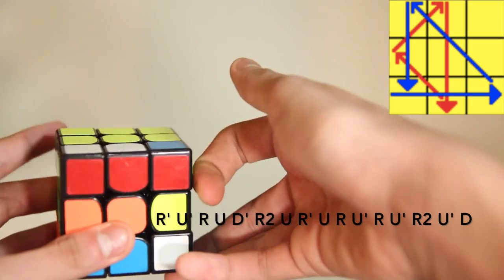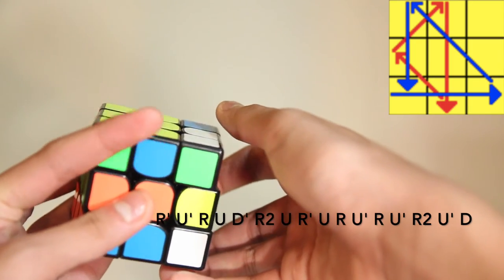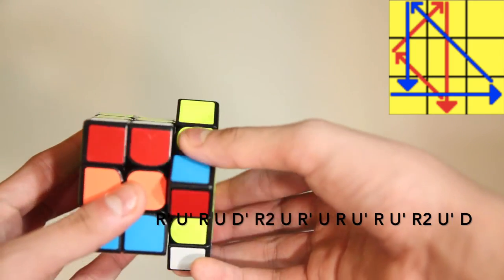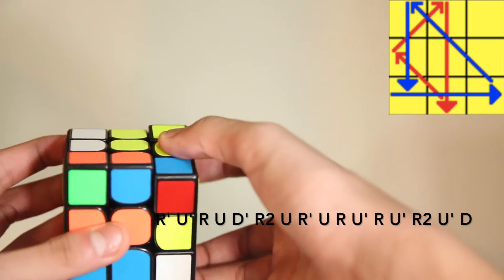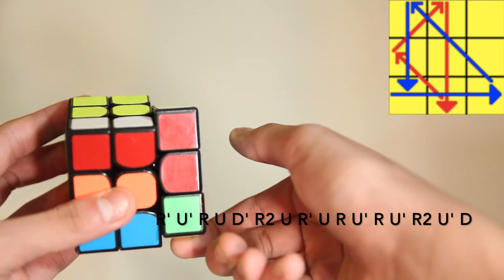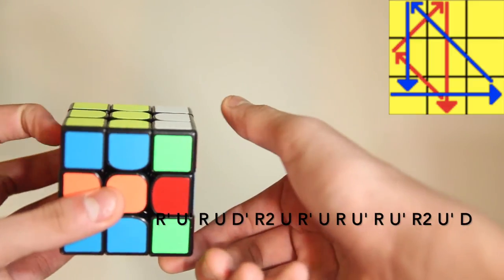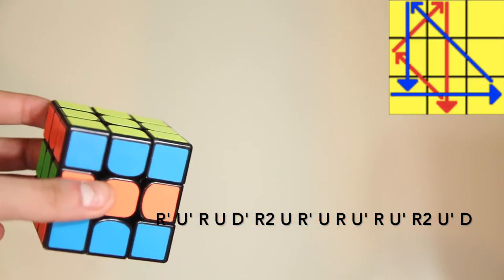Or like this with your right finger. I prefer doing this. And then R' U, R U' R, U' R2. And then that.